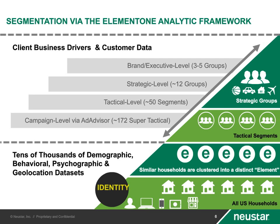Once we have our granular schema with every household in the United States clustered into one of those segments, we typically go to our clients to ask what they're trying to solve for, and merge this with the data they have internally to address their specific business challenge. Some clients, mostly agencies, prefer to play at the 172 super-tactical level because one day they're targeting households with a high propensity to be BMW owners and the next day Home Depot shoppers. That flexibility and the ability to constantly change how you're prioritizing — agencies typically love that capability.